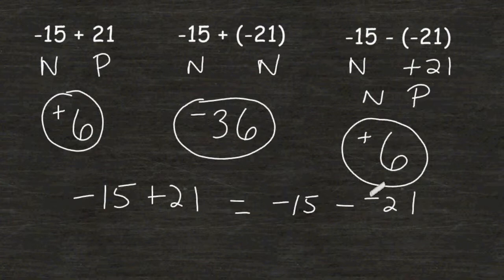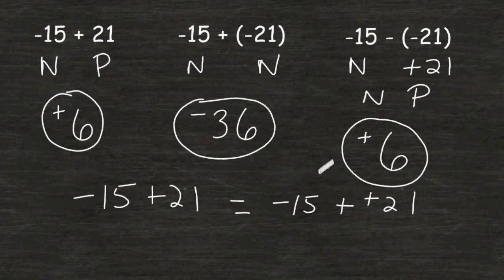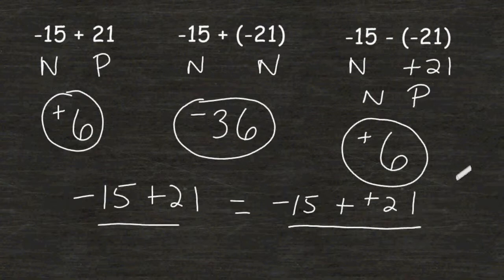Whenever a negative is immediately followed by a subtraction sign, we simply take those two symbols and turn them into addition signs or positive signs. So we can see that the first and the third example are identical to each other.